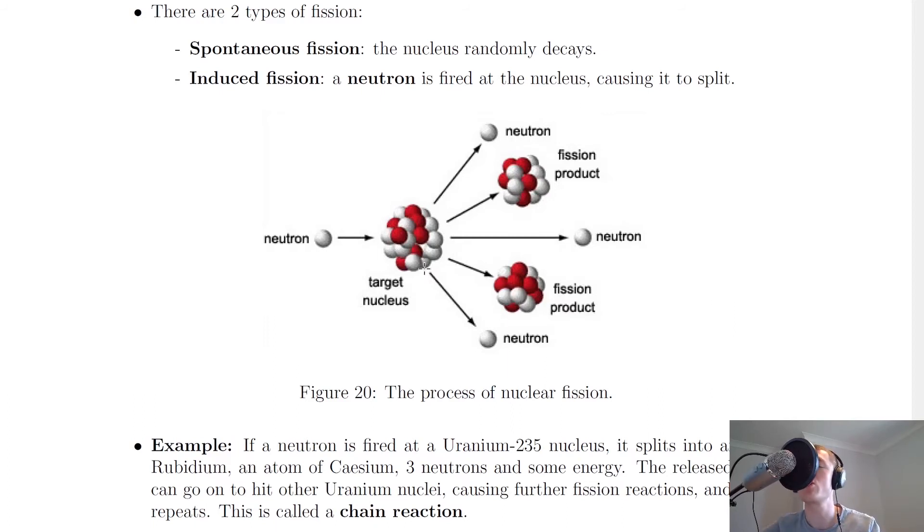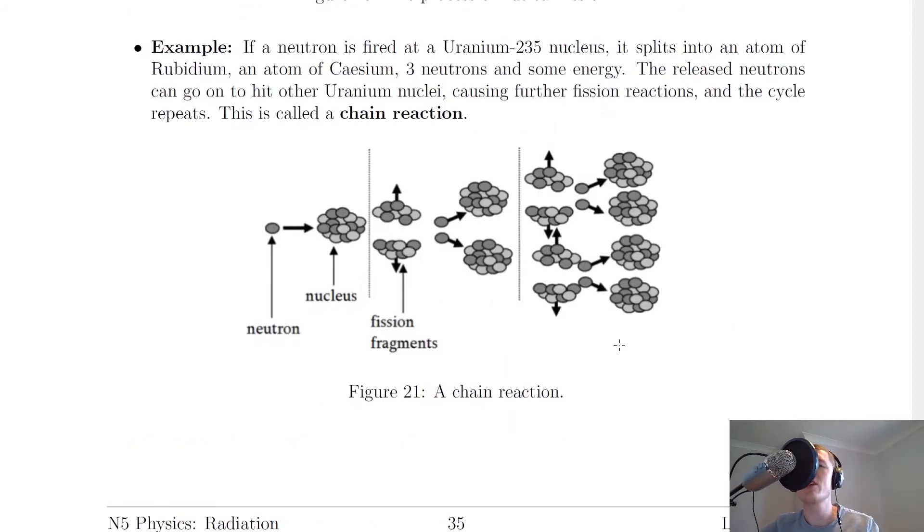Consider an example now: if a neutron is fired at a uranium-235 nucleus, it splits into an atom of rubidium, an atom of cesium, three neutrons, and some energy. Remember, it's always going to release energy as part of the reaction. The released neutrons can go on to hit other uranium nuclei, causing further fission reactions, and the cycle repeats. This is called a chain reaction.